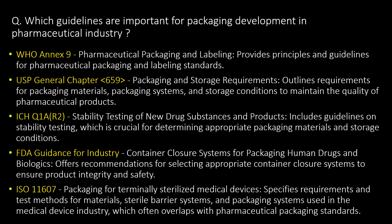Last and important question: which guidelines are important for packaging development in the pharmaceutical industry? Following are five important guidelines: first, WHO Annex 9; second, USP General Chapter No. 659; third, ICH Q1A(R2); fourth, FDA Guidance for Industry; and fifth, ISO 11607.